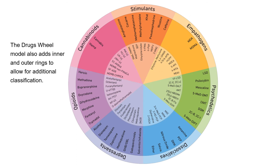Adding these extra categories ensured that there was no need for a miscellaneous or 'other' category, and all known drugs fit and continue to fit within the model. Inner and outer rings were also added to allow for further classification. For example, in this version the outer ring shows established drugs and the inner ring newer drugs. These rings can be adapted for other purposes, for example to divide categories by legal status or whether drugs are prescribed or non-prescribed.